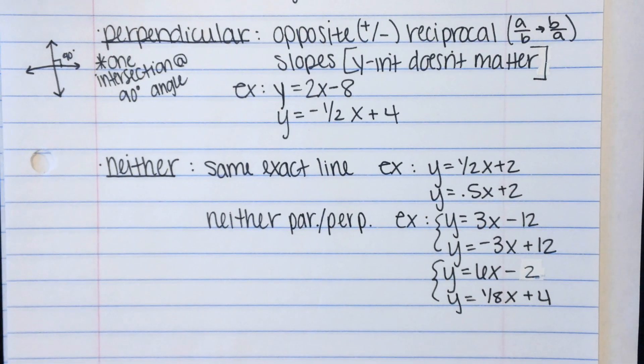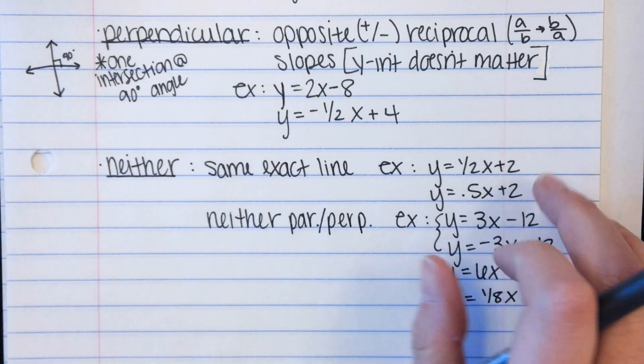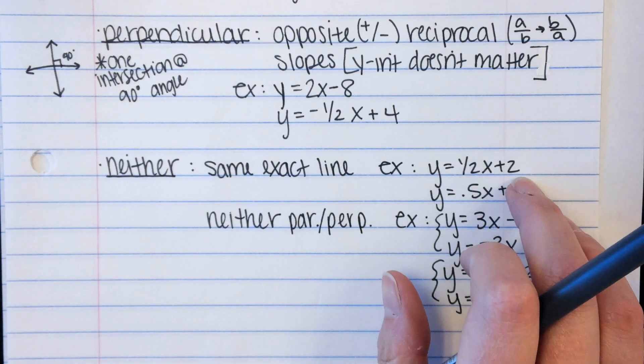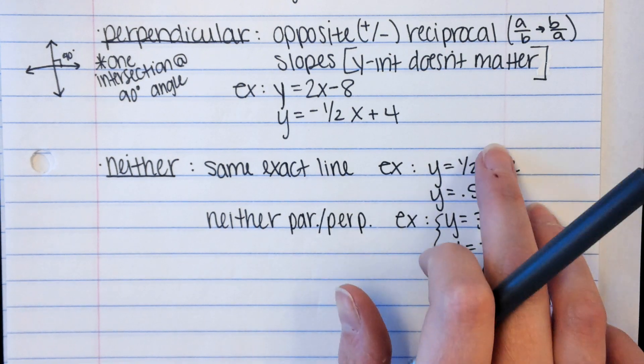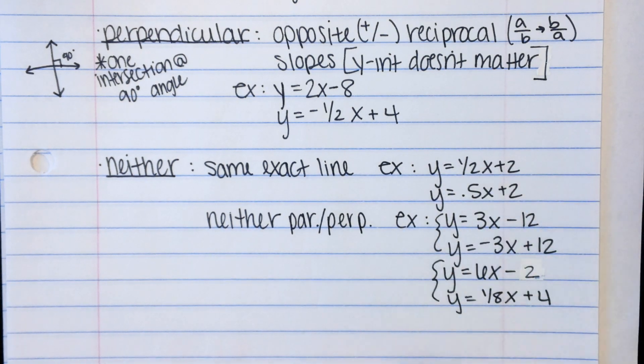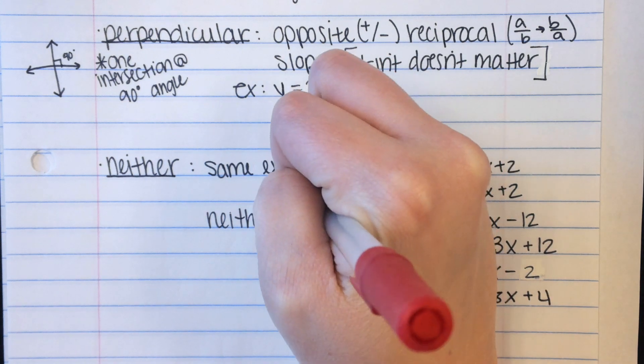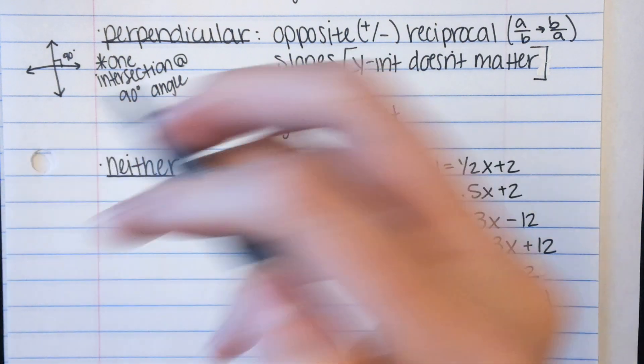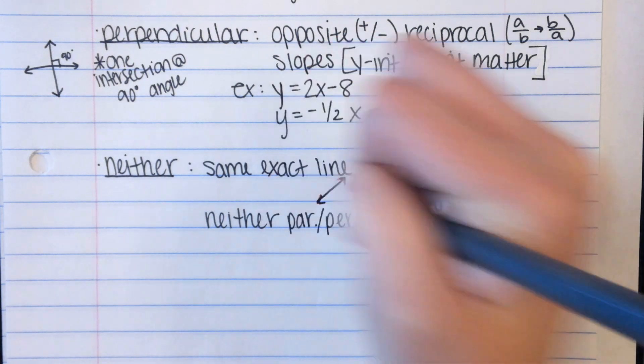You can also have lines that are neither. So you can have the exact same line. Okay? So like, y equals 1 half x plus 2 and y equals 0.5x plus 2. Those are the same. Okay? Those are the exact same line. They would overlap. If you drew one on a graph, the other one would overlap it exactly. And so, like, we can draw a little example. I'll use two colors here. So if I was to draw that line, if I was doing the exact same line, they would overlap exactly. Okay?